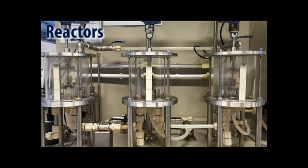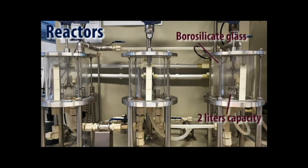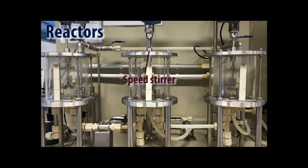In this CSTR, we have 3 reactors: Reactor 1, Reactor 2, and Reactor 3. These 3 reactors are made up of borosilicate glass with 2 liters capacity each. It has speed stirrer, temperature and conductivity sensor in each reactor. Overflow tubes are also provided in the second and the third reactor.